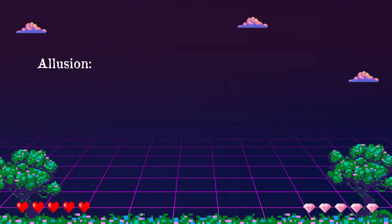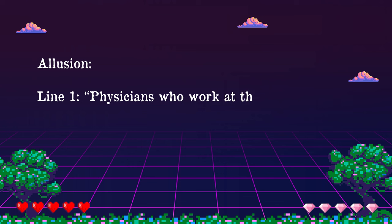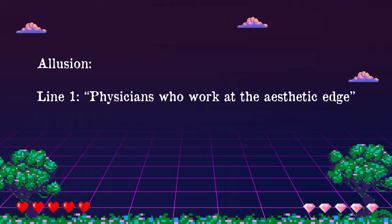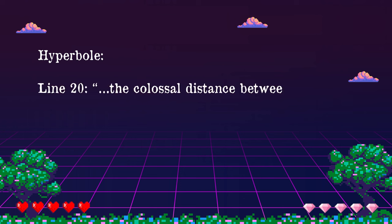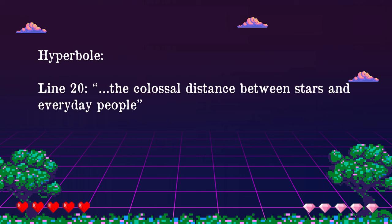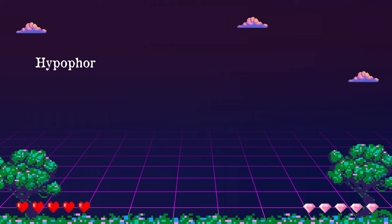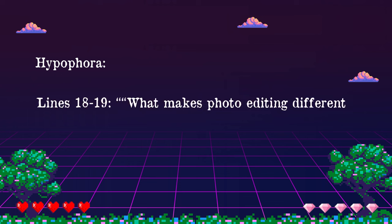For language techniques, I found the use of allusion in line one, where it says 'physicians who work at the aesthetic edge.' 'Aesthetic edge' makes reference to plastic surgeons without explicitly stating it. I also saw the use of hyperbole in line 20, where it says 'the colossal distance between stars and everyday people' — 'colossal' being the exaggeration. I also saw the use of hyperphora in lines 18 to 19, where a question is posed and an answer is given directly after: 'What makes editing photos different? In the past, those ideas...'